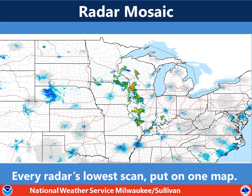Now, when all the radars from across the country are plotted onto one radar map, then we call this a radar mosaic. And for the Weather Service radar mosaic, it's showing every radar's lowest scan put onto one map.